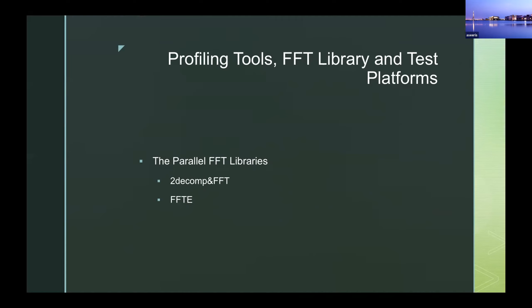FFTE is a Fortran library for parallel one-, two-, and three-dimensional FFTs. The MPI parallel version only works correctly when the number of MPI processes divides the grid dimensions. The present study used version 7.0 of FFTE, which is the latest version.